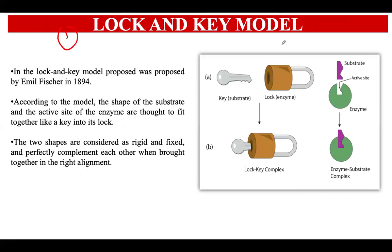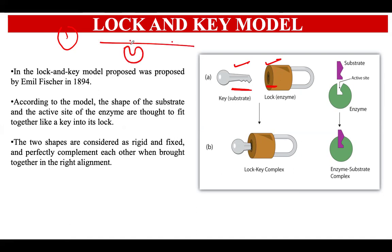The first one is the lock and key model. Imagine a lock and a key — just like every lock has a specific key, which means that the key's shape needs to fit into the shape of the lock. That is only when the lock will open. Similarly, this model suggests that every enzyme's active site needs to be complementary with the shape of the substrate.